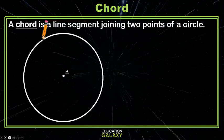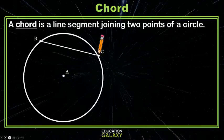A chord is a line segment joining two points of a circle. So you take a point that's on your circle and then you take another point that's on your circle and you connect them. It can be any two points on the circle, but as long as the points are on the circle and connected, it's a chord.